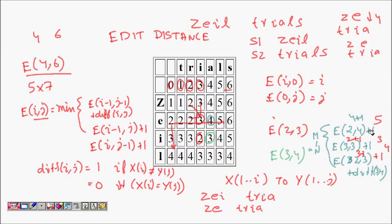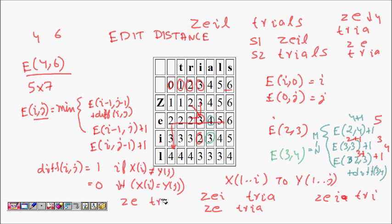The third option is e(2, 3) + diff(3, 4): convert 'ze' into 'tri', which requires 3 operations, and then replace 'i' with 'a', so the cost is 3+1=4. So the minimum of 5, 3, and 4 is 3, confirming that e(3, 4) = 3.